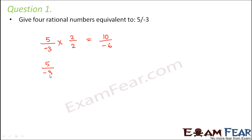So in a similar way, you can get more equivalent rational numbers by multiplying the numerator and denominator with different numbers. Like when you multiply them by 3, you get 15 divided by minus 9. So in a similar way, you multiply it by 4, you get 20 divided by minus 12. Now if you multiply the numerator and denominator by minus 1, what do you get? You get minus 5 divided by 3.